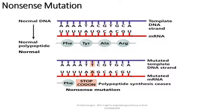In a nonsense mutation, a stop codon may be found earlier on the mRNA, so no complementary tRNA base pairing occurs. Rather short polypeptide chains are formed where protein synthesis ceased.